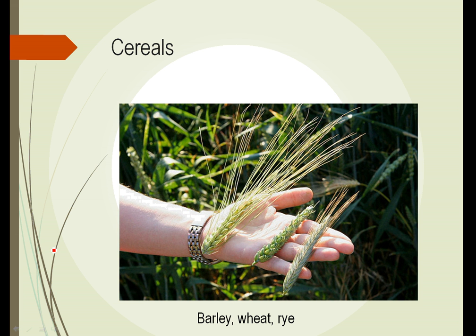The most common grasses that humans use are the cereals: barley, wheat, and rye. Corn can also kind of be included in that cereal group. Here we see barley, wheat, and rye.